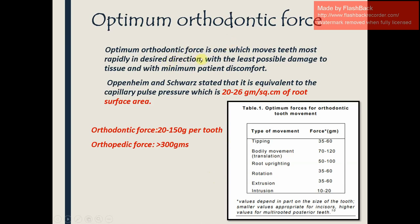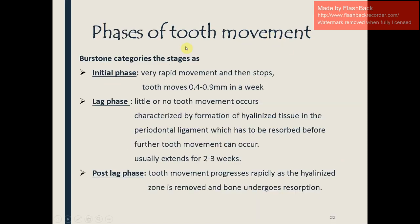Optimum orthodontic force is one which moves teeth most rapidly in the desired direction while causing least possible tissue damage and minimum patient discomfort. Oppenheim and Schwarz stated it is equivalent to capillary pulse pressure: 20 to 26 grams per square centimeter of tooth surface area. Optimum orthodontic force should be 20 to 150 grams per tooth; optimum orthopedic force should be more than 300 grams. Force values by movement type: tipping, rotation, and extrusion require 35–60 grams; intrusion requires 10–20 grams (minimum); root uprighting requires 50–100 grams; bodily movement requires 70–120 grams (maximum).